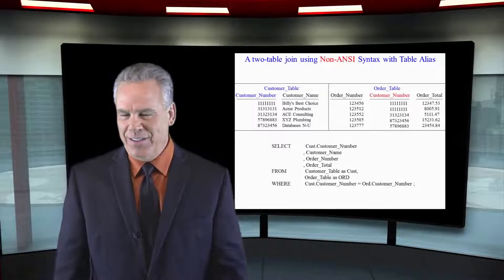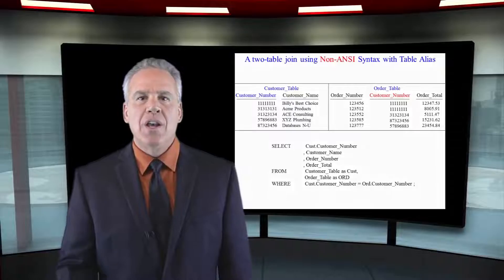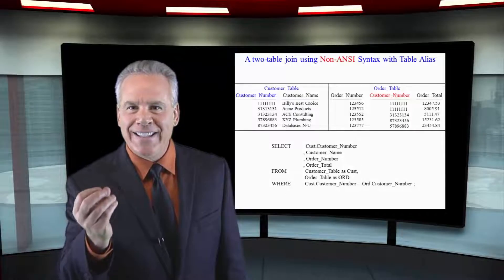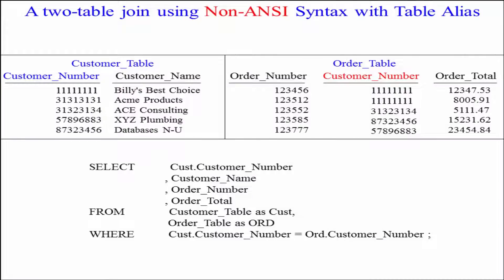Now take a look at this. This is the same query we just saw, but who wants to always put select customer table dot customer number in there? That's too long, so we're going to alias the table names. Look at the from clause here. In our from clause we're saying from customer table as cust and order table as ord.